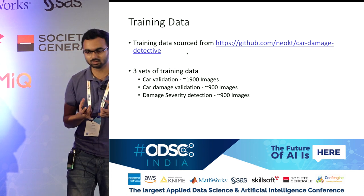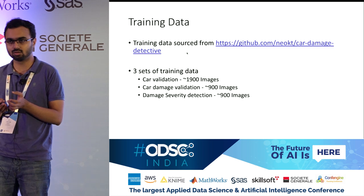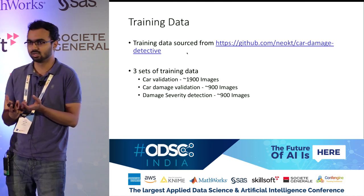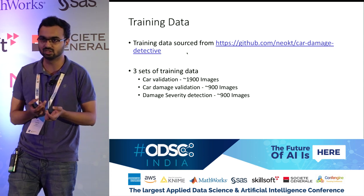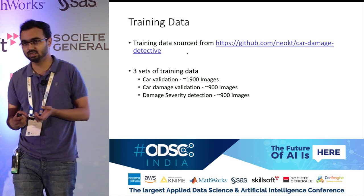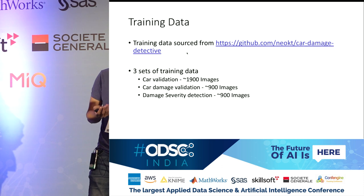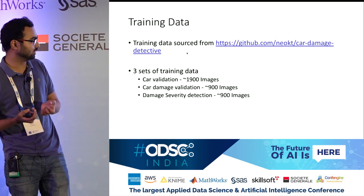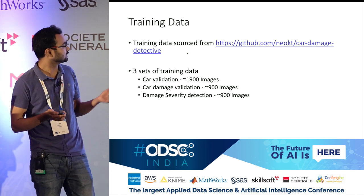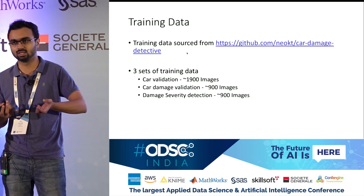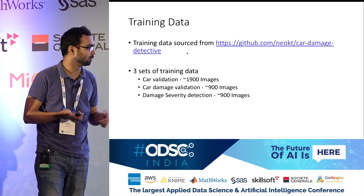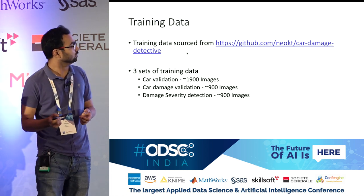Even though the simple problem statement is to detect damage, when you break it down there are three main problems to solve. First, from the image, figure out whether it's actually an image of a car — people can randomly upload images of interiors or without the car in focus. Second is damage validation — whether there is any damage or not. Third is the severity of the damage, since ZoomCar would not want to charge someone for just a minor scratch. The first two are binary classification problems and the last is multi-class detection. For car validation, dataset sourcing is simple — Google search results work fine. For the other two, we needed images with actual damage.